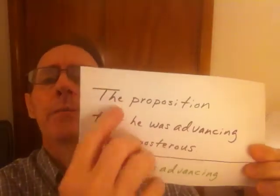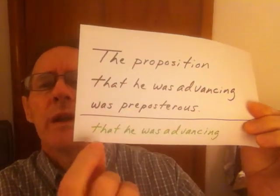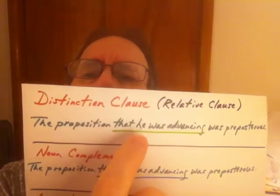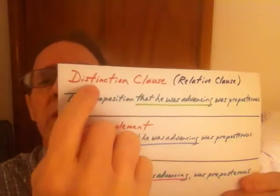In my previous videos, I did a demonstration and I used a sentence that went like this: "The proposition that he was advancing was preposterous." Here's the noun clause: "that he was advancing." You can see that in previous videos. Now I showed how that clause can be used as a distinction clause — it used to be called a relative clause; I call it a distinction clause now.